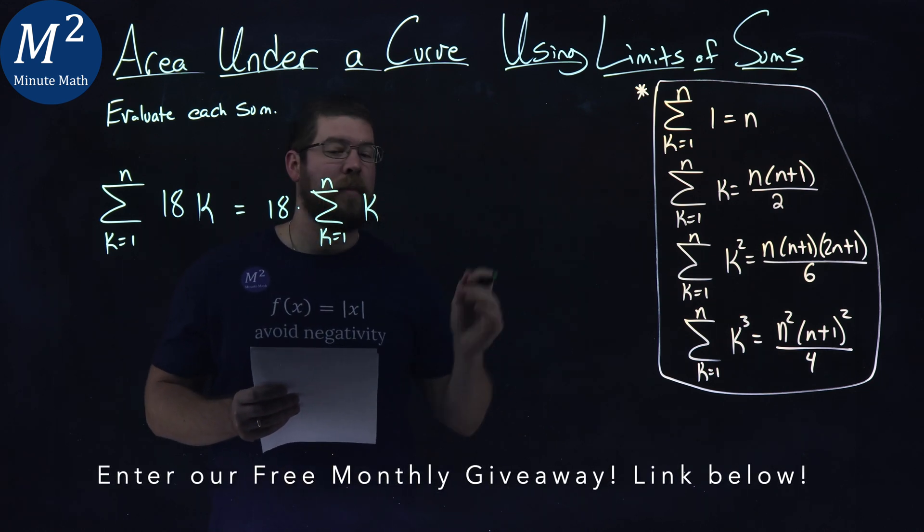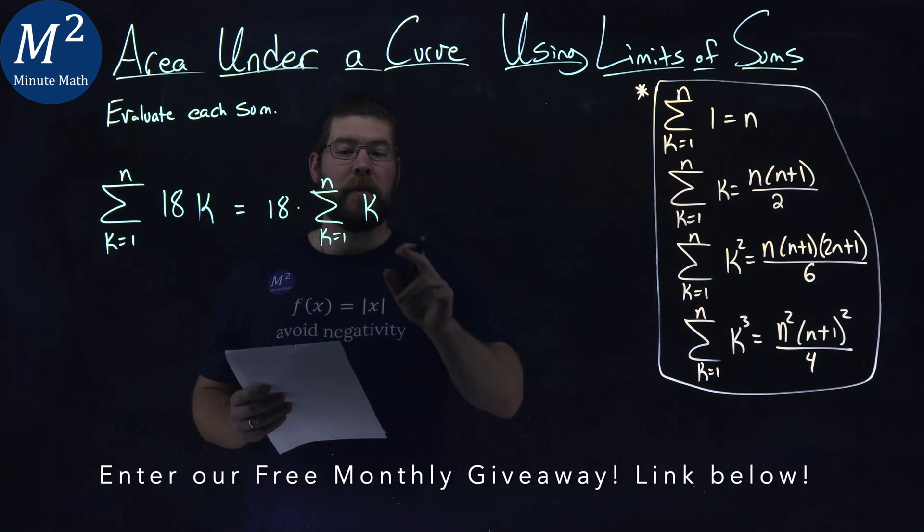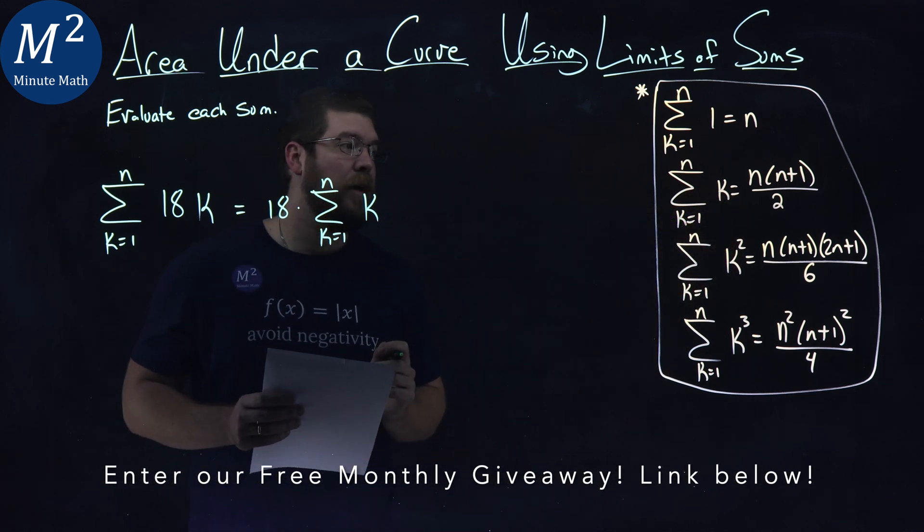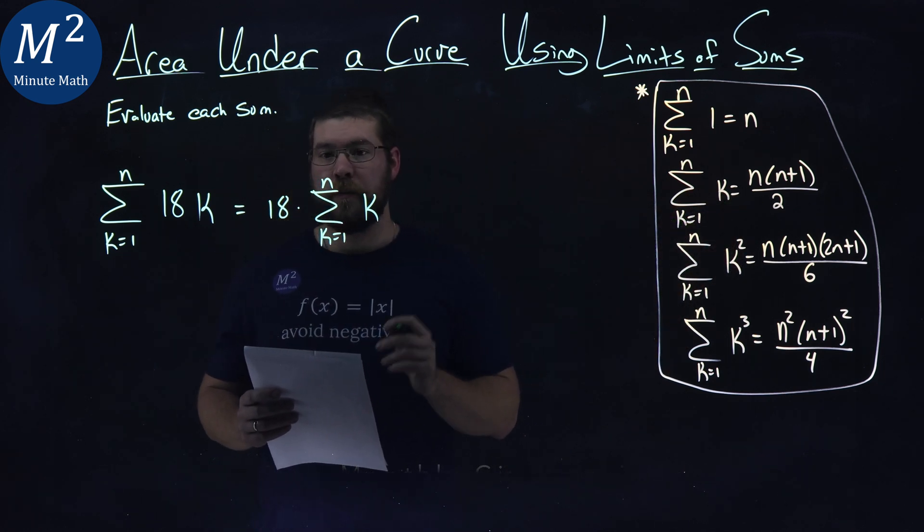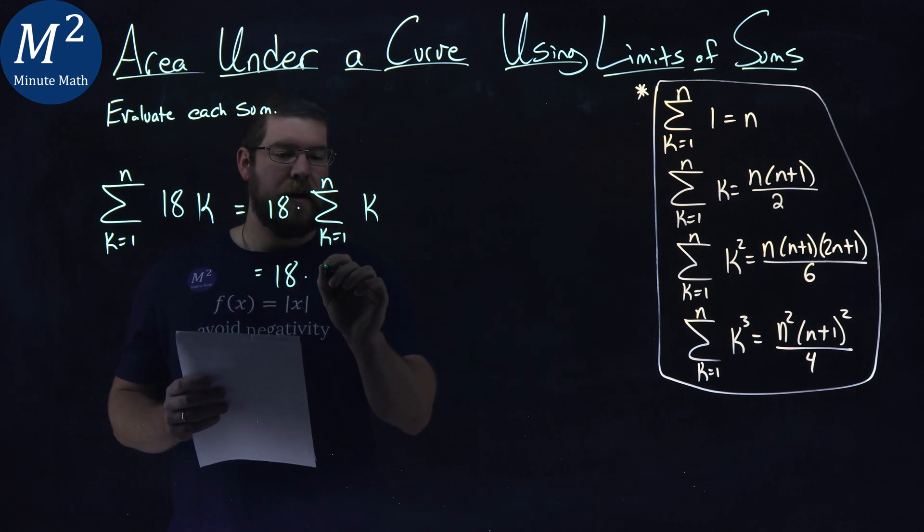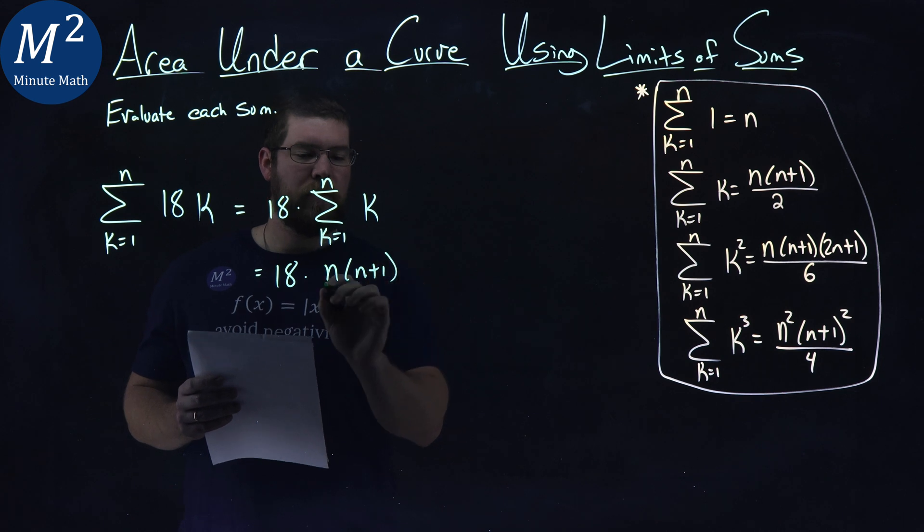Now we can see from our definition, we know the sum from k equals 1 to n of k is that n times n plus 1 over 2. So, rewrite that. We have 18 now times n times n plus 1 over 2.